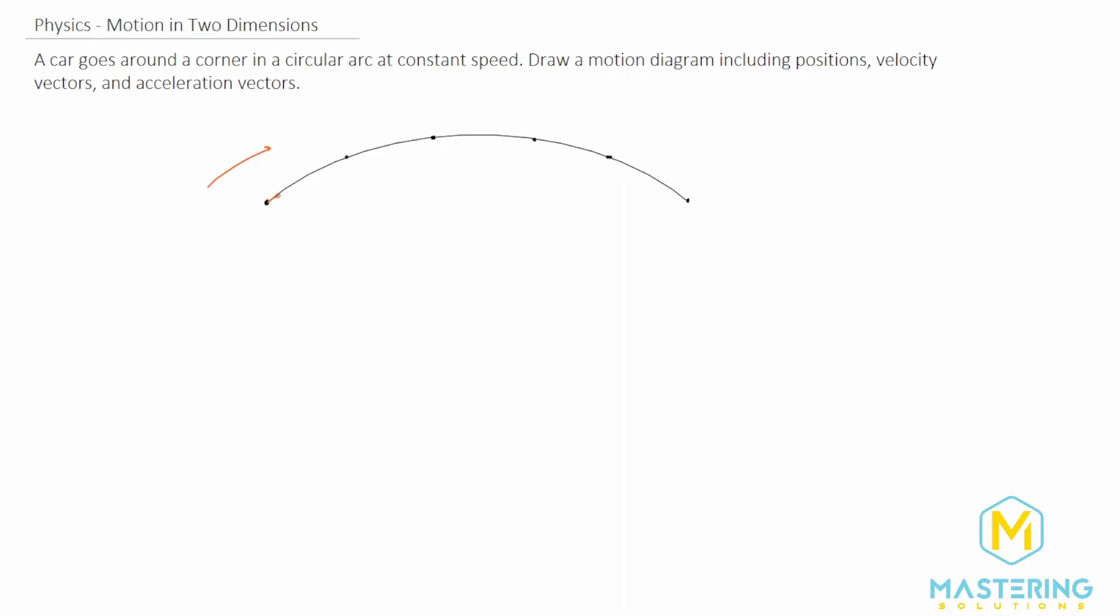So we're going to draw a straight line to represent the velocity vector for the first one. Now I'll do the same thing for all the others. Okay, so now we have all of the velocity vectors drawn for all of the positions.